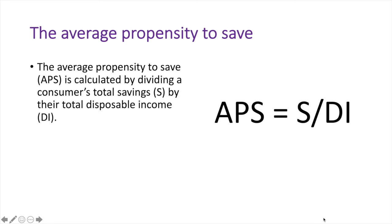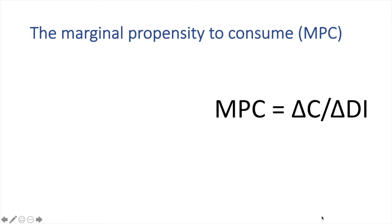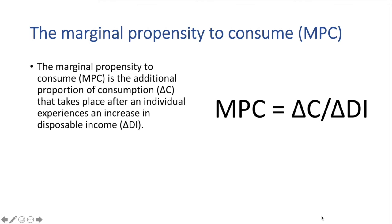The average propensity to save is calculated by dividing a consumer's total savings by their total disposable income. If I save $10,000 out of my $100,000 salary, my APS is 0.1.